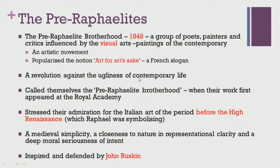In a nutshell, the poets of the Pre-Raphaelite Brotherhood were revolting against the ugliness of contemporary life. This ugliness was of different forms — it was physical, economic, commercial, and also moral in nature.